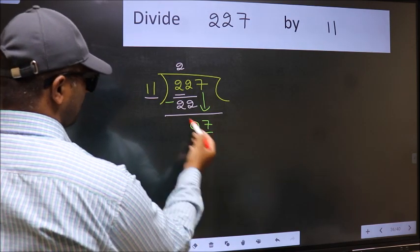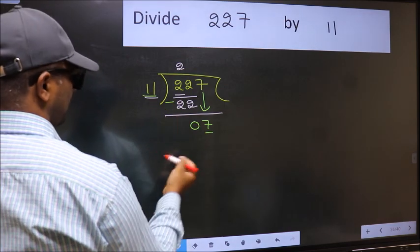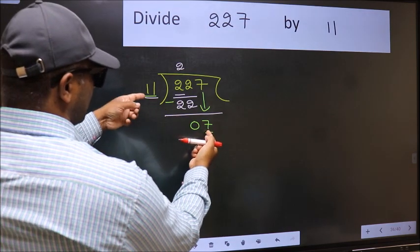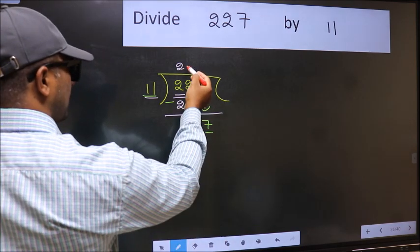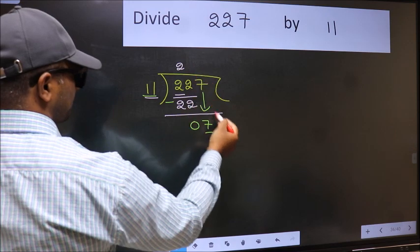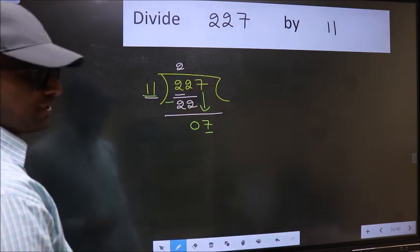Here we have 7, and here 11. 7 is smaller than 11. So what many do is, they directly put dot and take 0. Which is wrong.